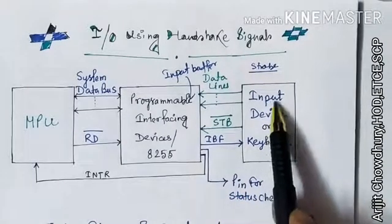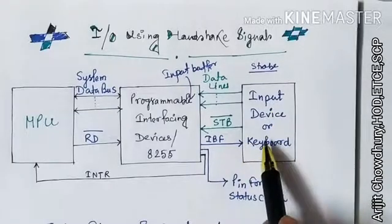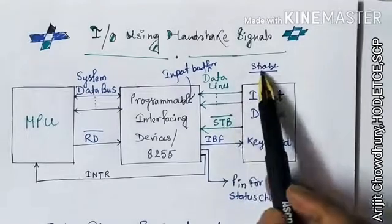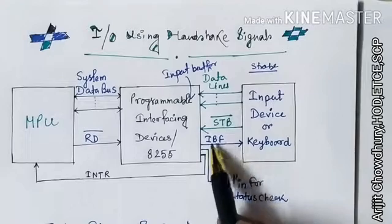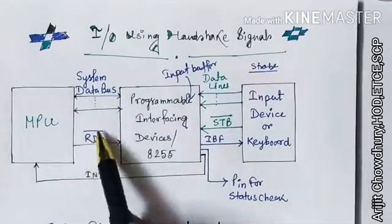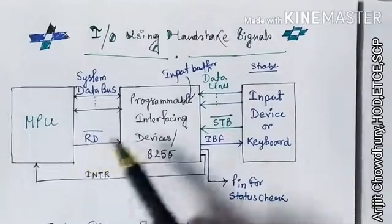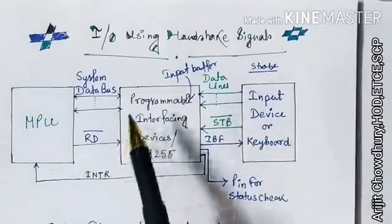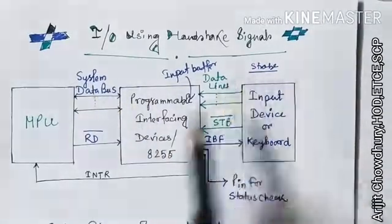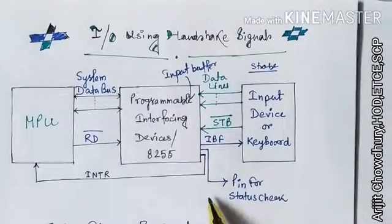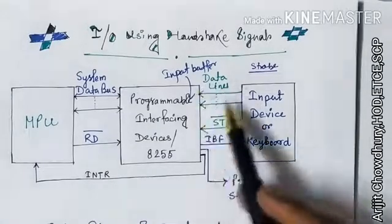We are considering the input device, that is the keyboard. There are some signal lines: data lines, STB (which means strobe), IBF (which means input buffer), RD bar (read bar), and INTR (interrupt request). The strobe bar is an active low signal. These are the signals we will discuss using some diagrams.